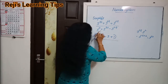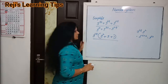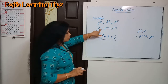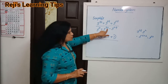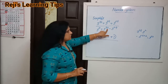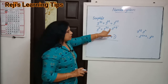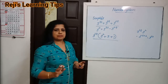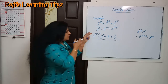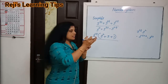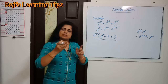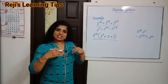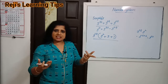Now for the denominator: 3 raise to 31 plus 3 raise to 30 minus 3 raise to 29. In this case, the least number is 3 raise to 29.